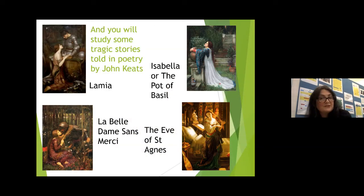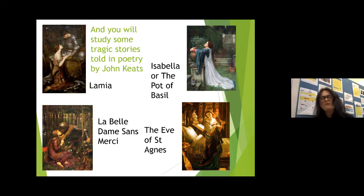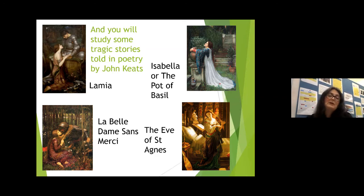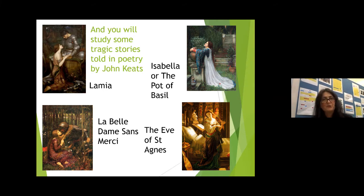You will also study some tragic stories told in poetry — what we call narrative poetry — by John Keats. Keats was a Romantic poet. By Romantic, we don't mean he was writing about love; it refers to a particular period of literature characterised by an engagement with nature, things that are a little bit wild, and a focus on the supernatural. The poems we look at are Lamia, La Belle Dame Sans Merci, Isabella or the Pot of Basil, and The Eve of St Agnes — all tragic stories.